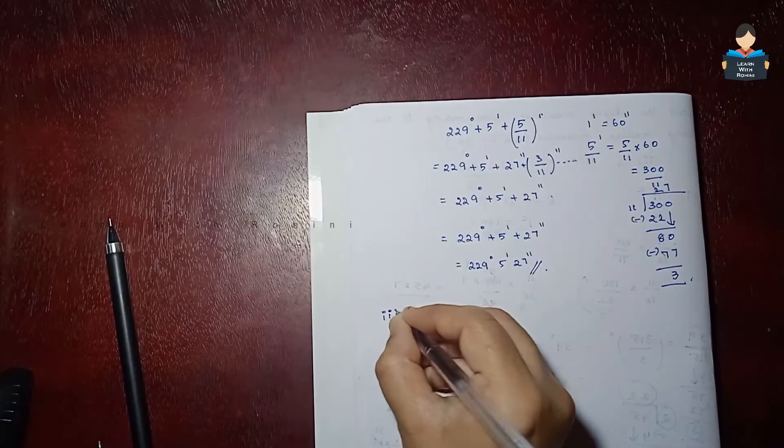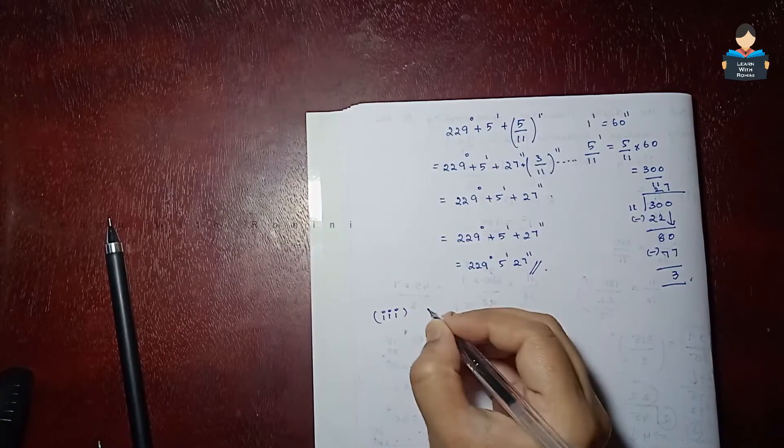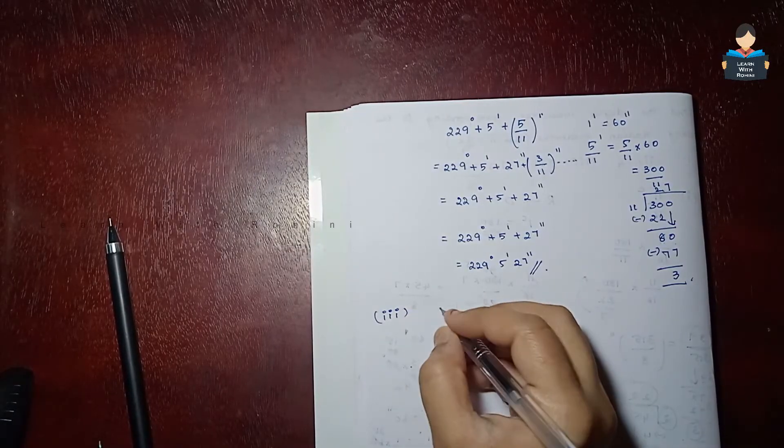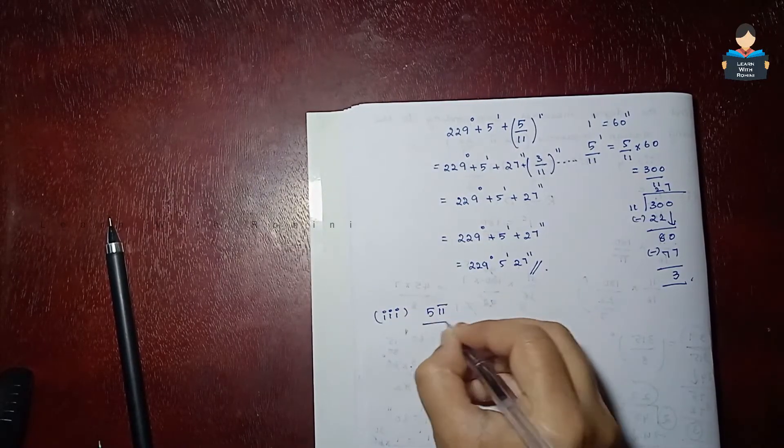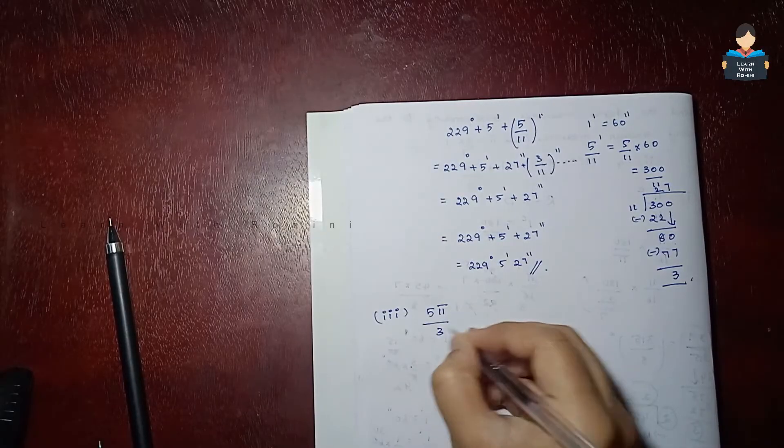Next, third subdivision: 5 pi by 3 radian.